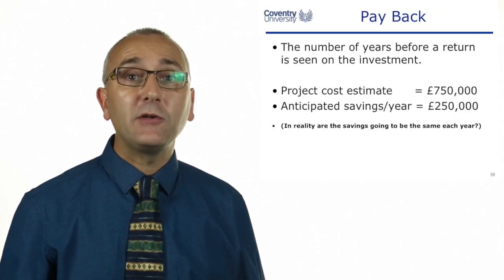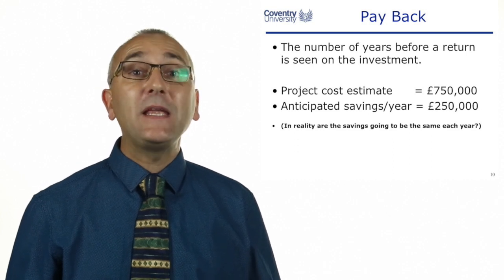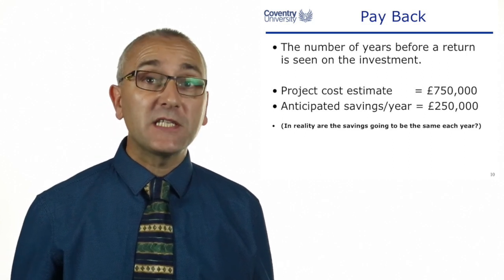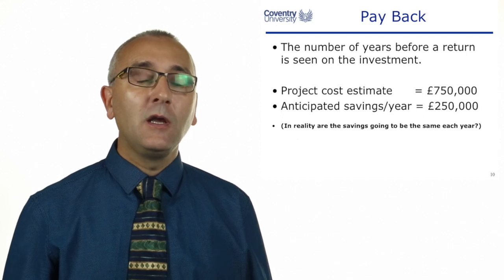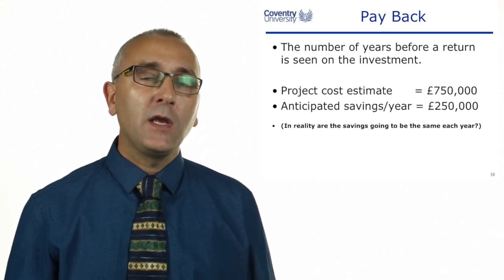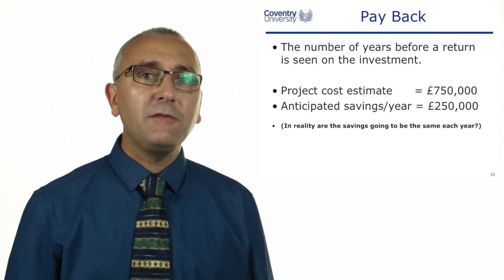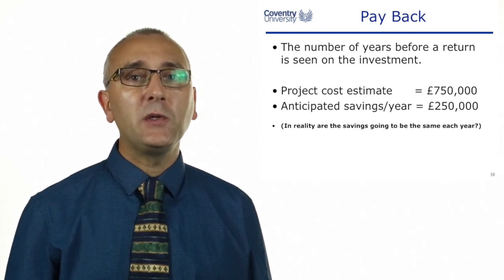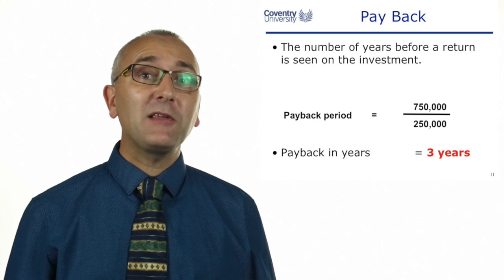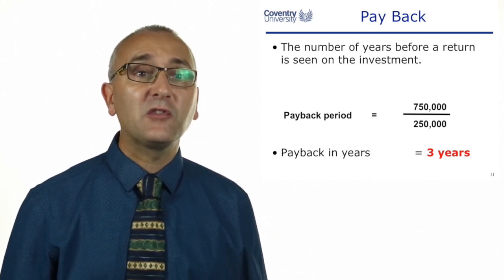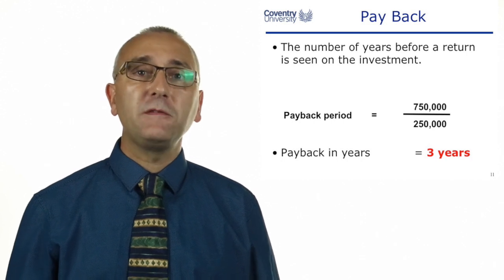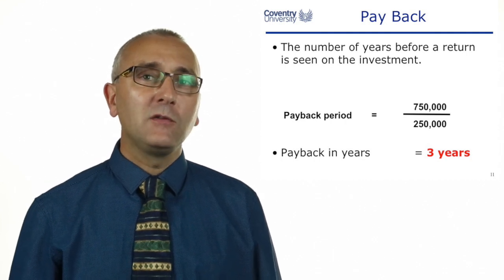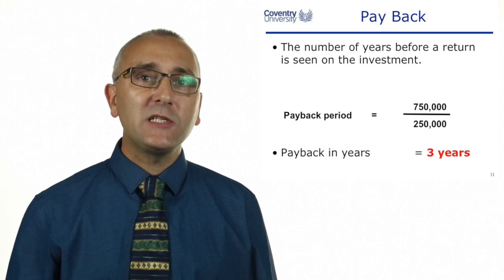For instance, we've got a project here that costs £750,000 and the anticipated savings are £250,000 a year. The problem with this method is that it's quite unlikely the savings per year are going to be equal — £250,000 in year one, year two, and year three. Using this method shows payback within three years: £750,000 divided by £250,000. Please do not use this method.